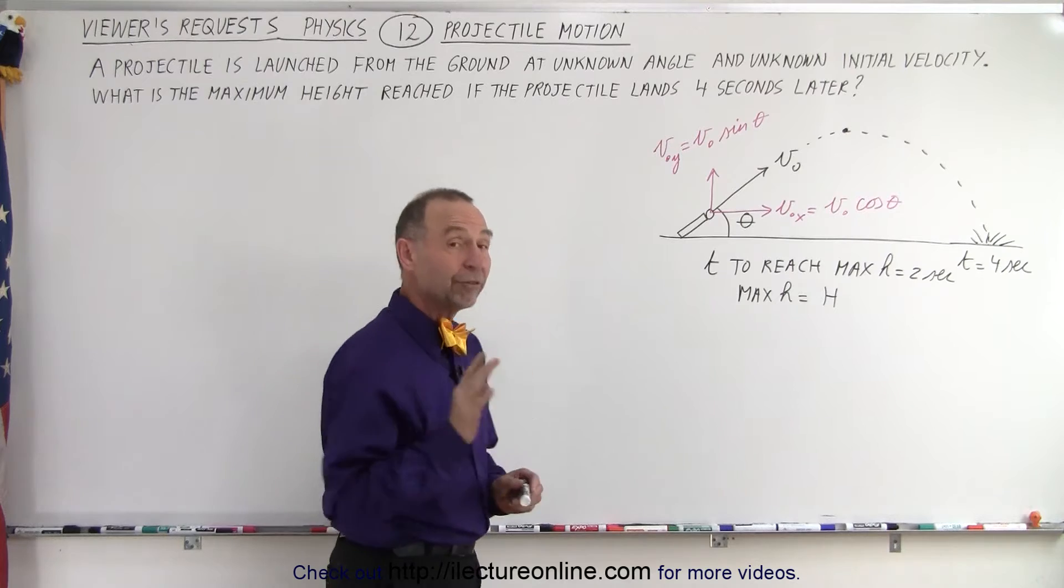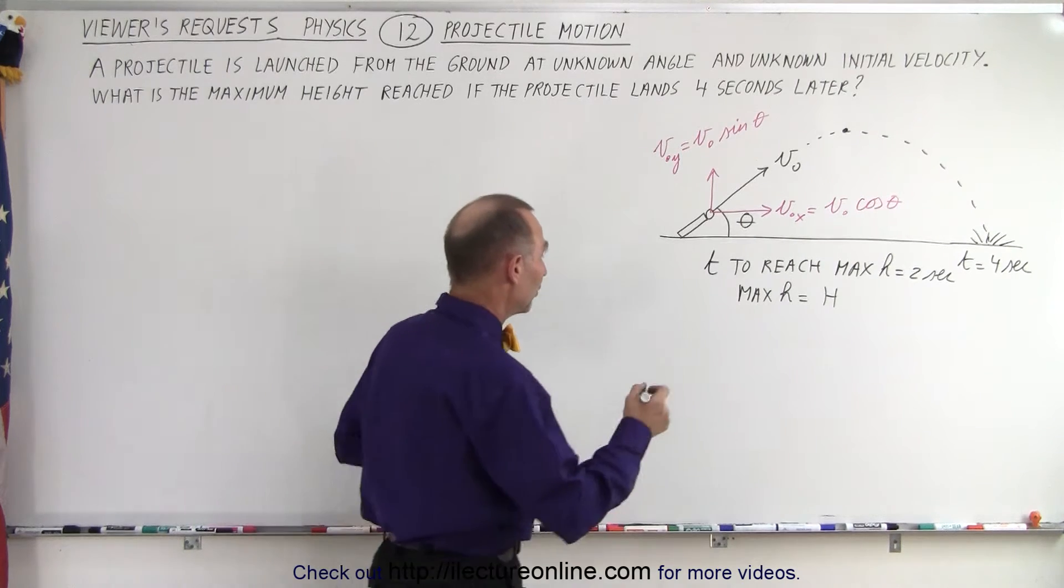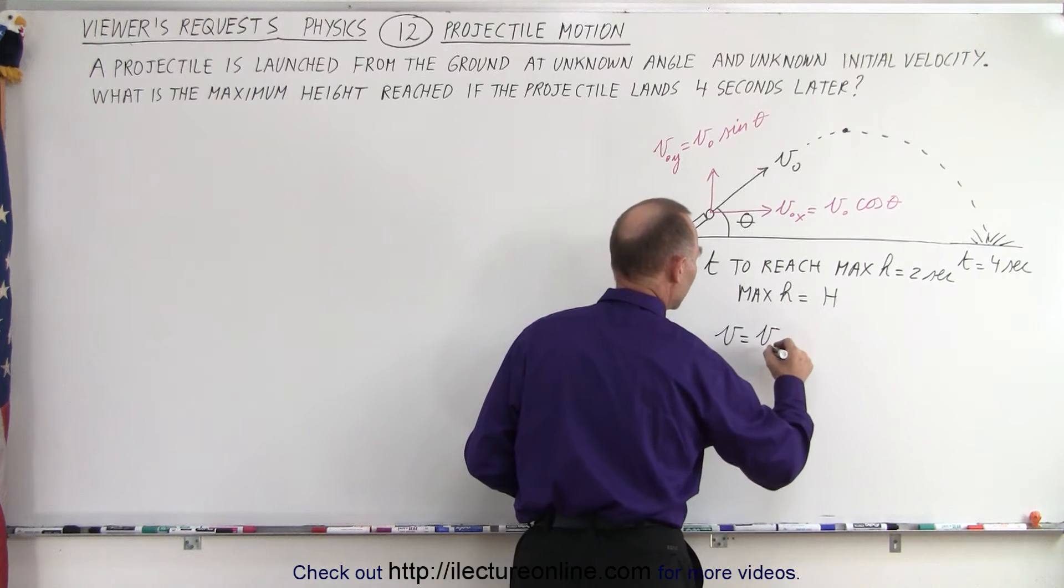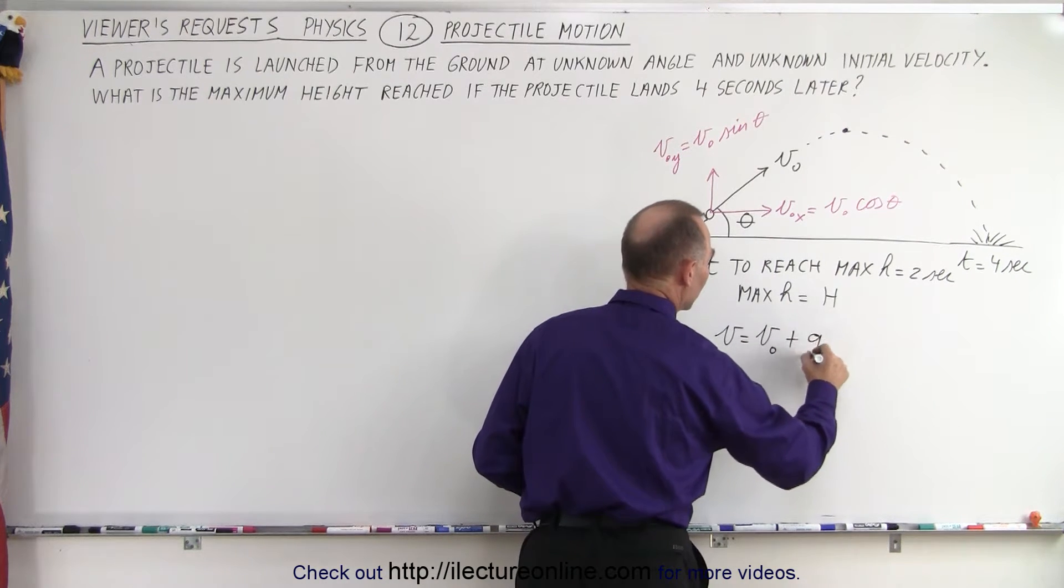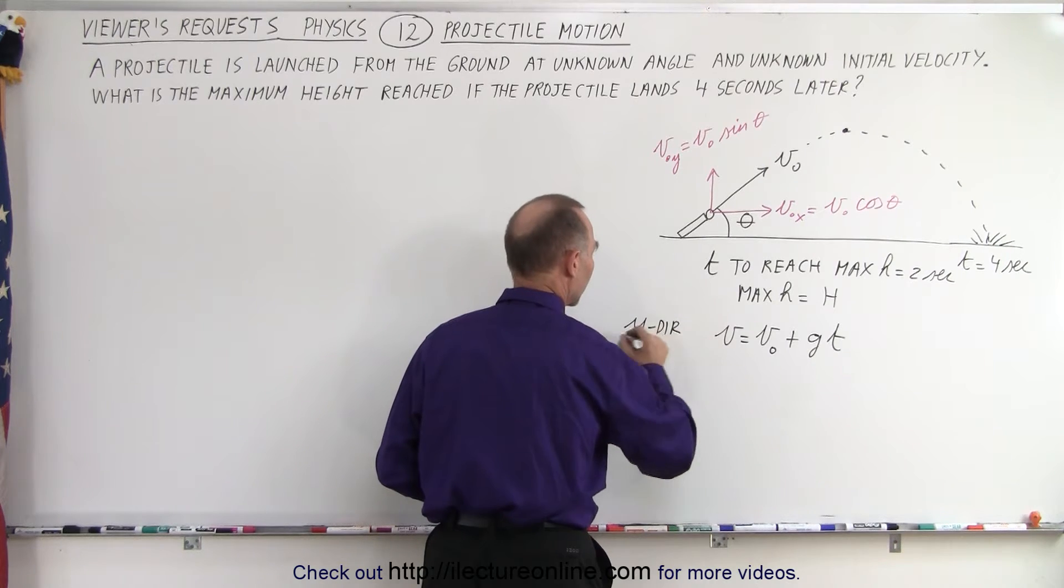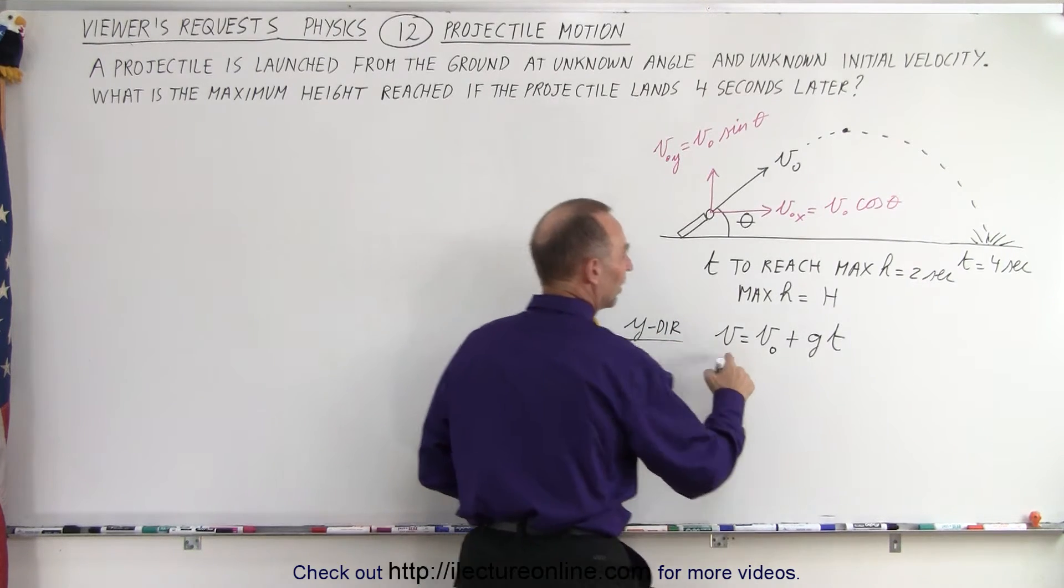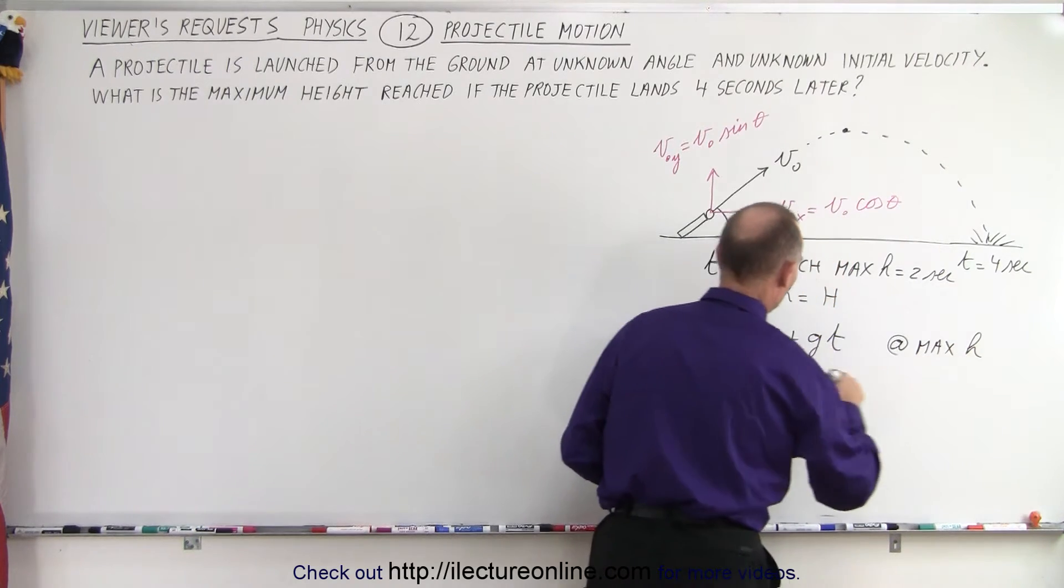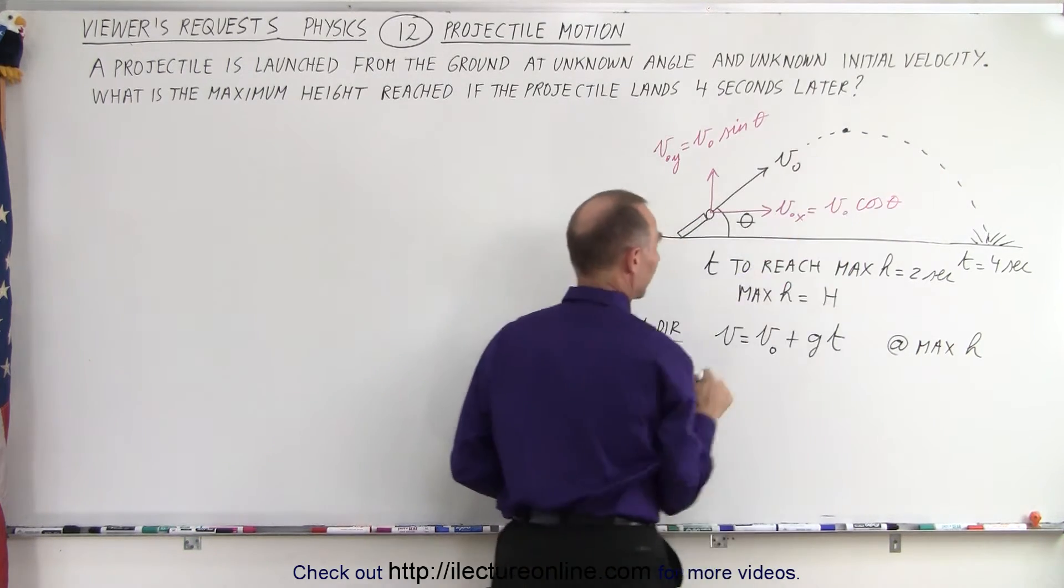Now we need one of our equations of kinematics. The equation we're going to use is v equals v initial plus g times t, and this is in the y direction. This is at maximum height.